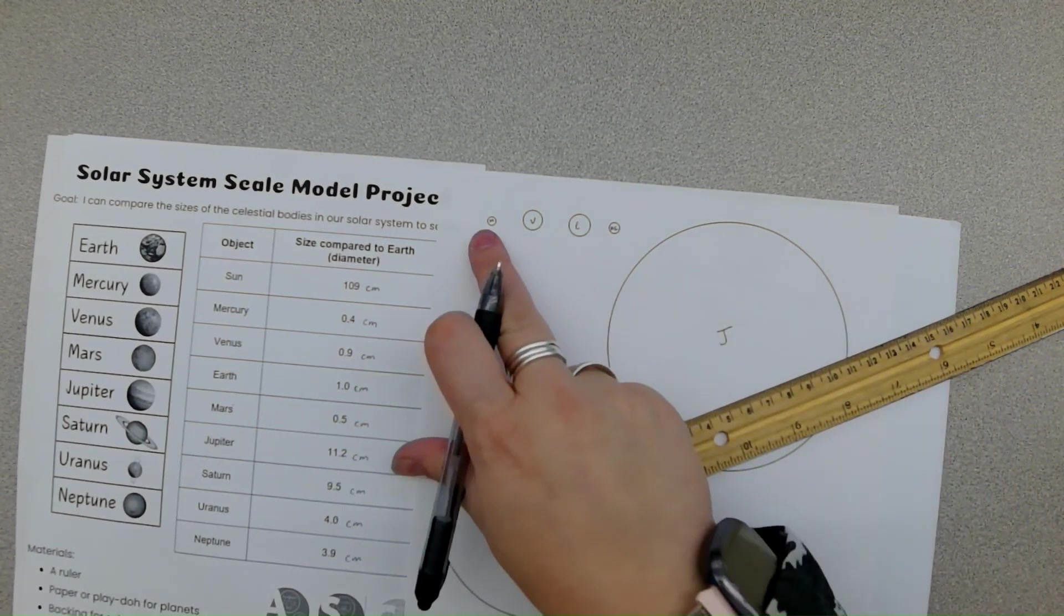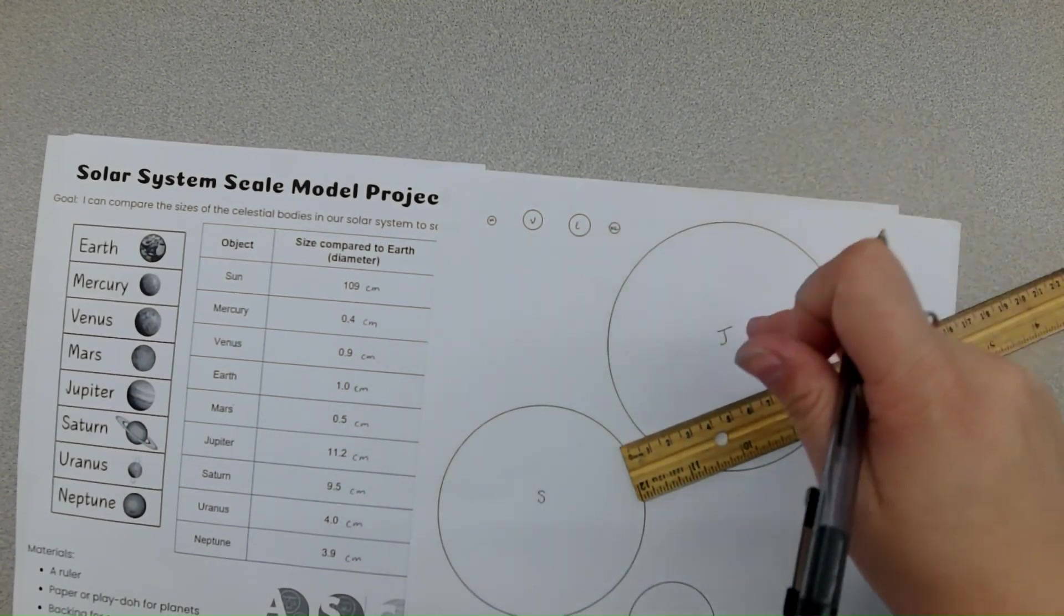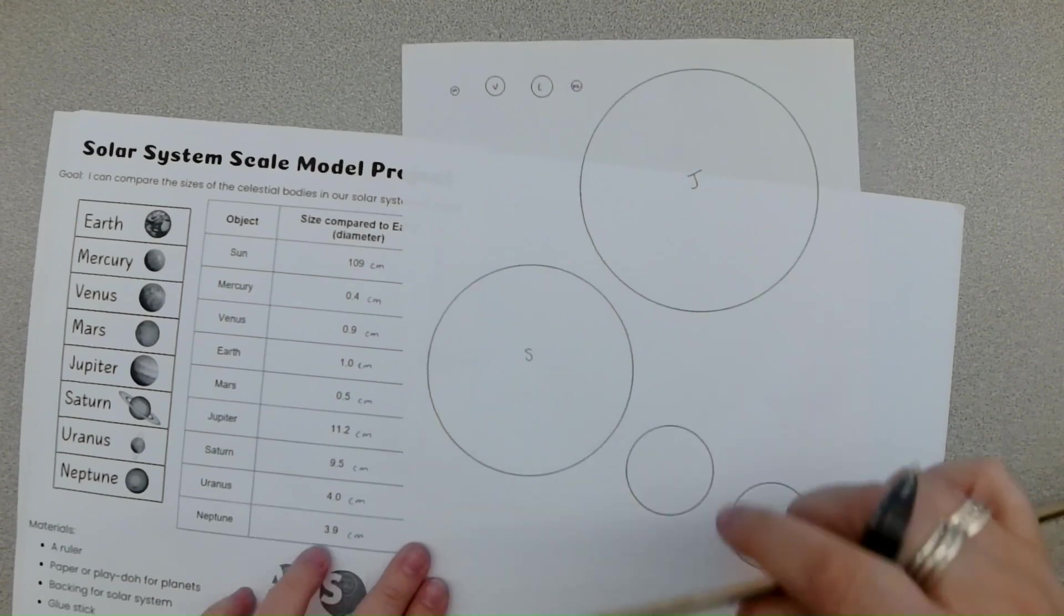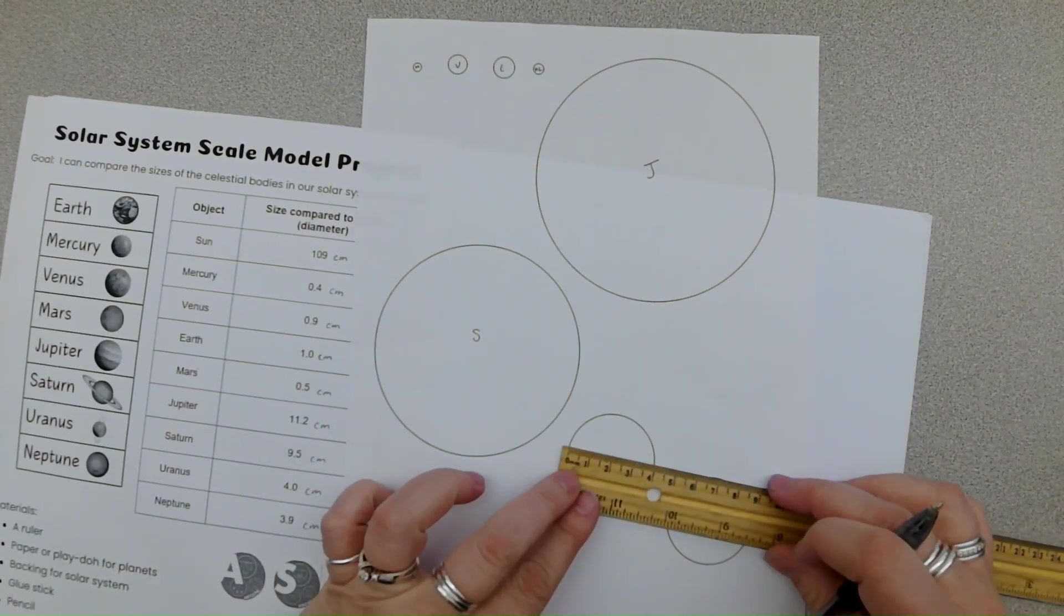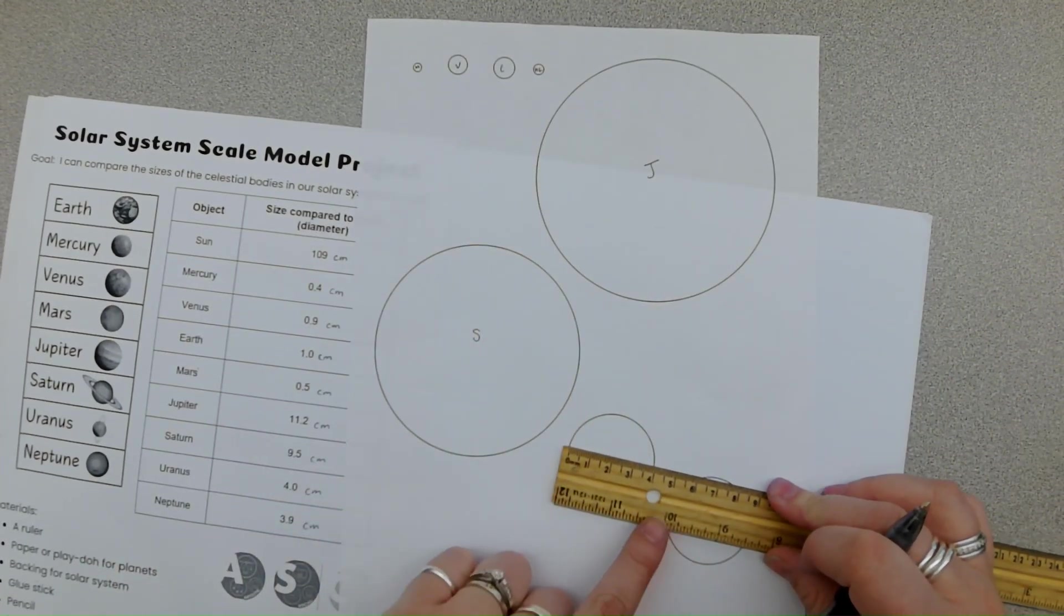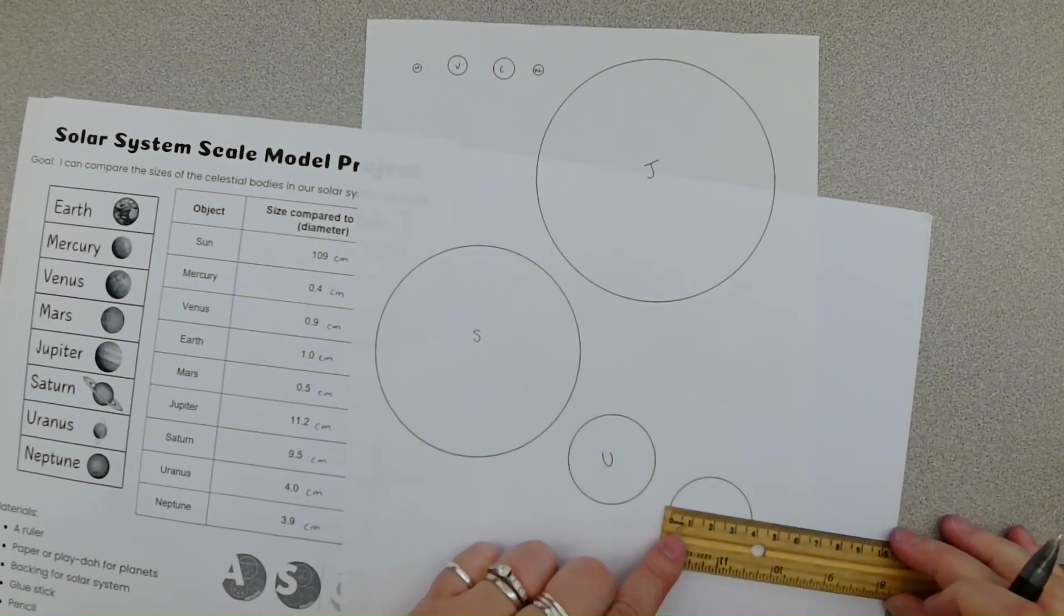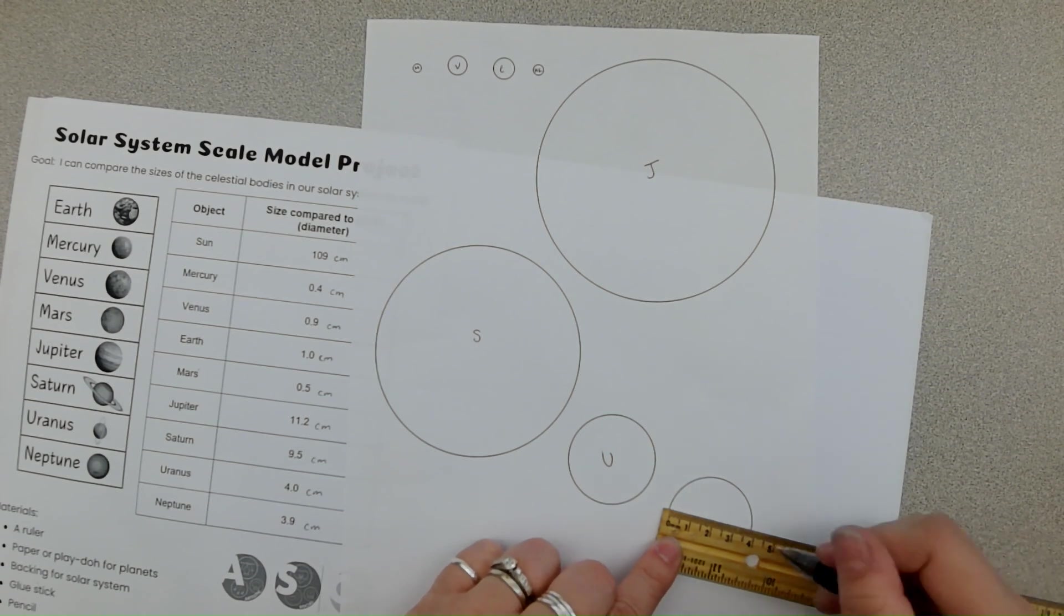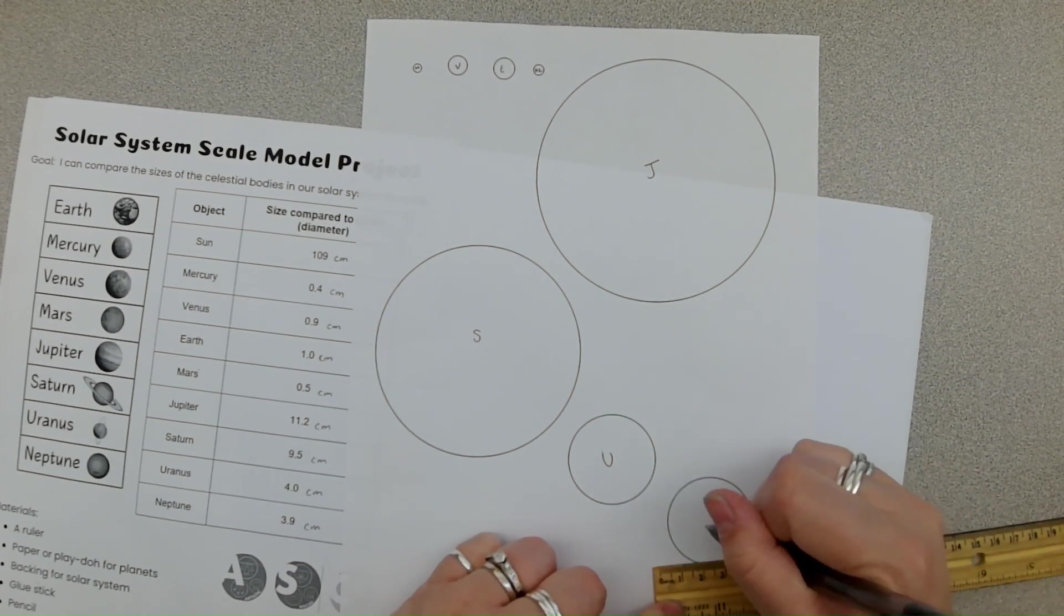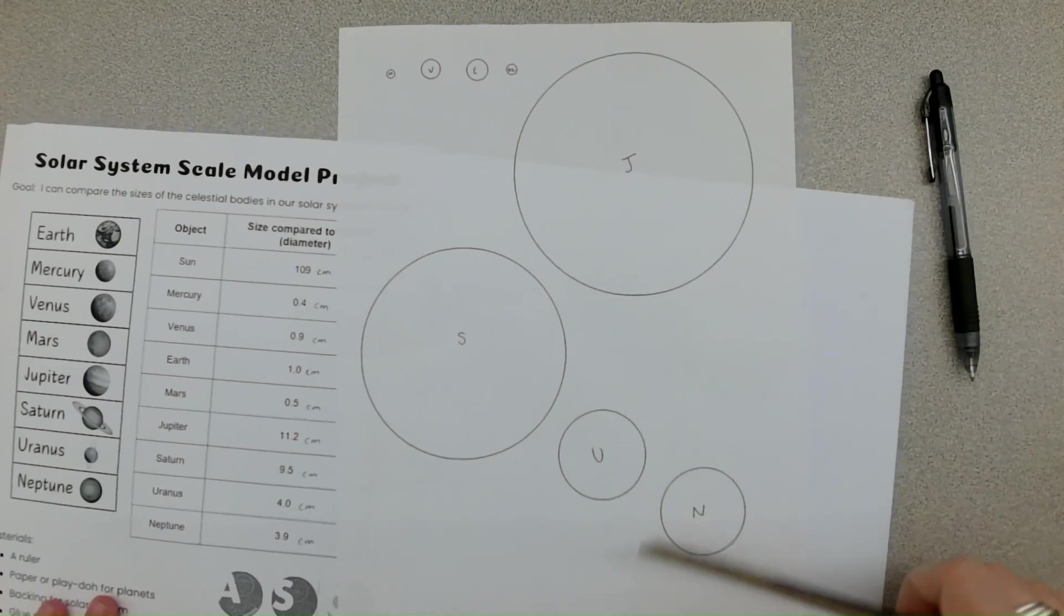We have Mercury, Venus, Earth, Mars, Jupiter, Saturn. We only got two more. I'm going to measure here. And that's four, exactly four centimeters. Oh, that's going to be my Uranus. And then last but not least, we can't forget 3.9. And that is our Neptune. Perfect.